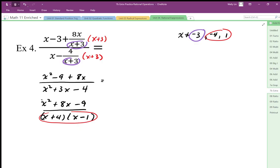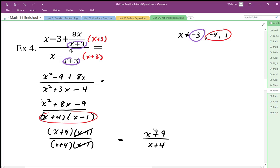I can now start canceling things. I need to factor before I cancel, so I have x plus 9, x minus 1, x plus 4, x minus 1. I stated my restrictions, so I can cancel. So my simplified expression is x plus 9 over x plus 4. That's much easier to deal with than this expression here.